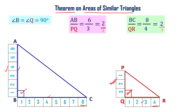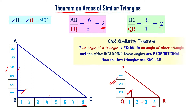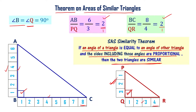Now applying the SAS criterion for similarity of triangles: if an angle of a triangle is equal to an angle of another triangle, and the sides including those angles are proportional, then the two triangles are similar. Since angle B equals angle Q, and the sides including those angles are proportional, triangle ABC is similar to triangle PQR.